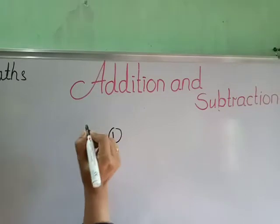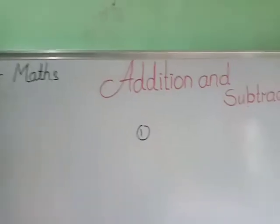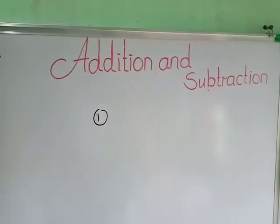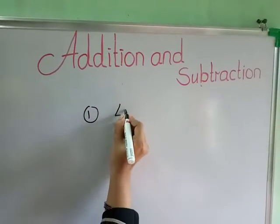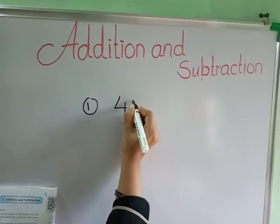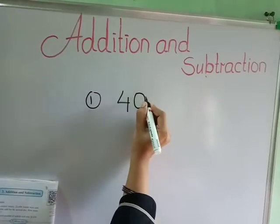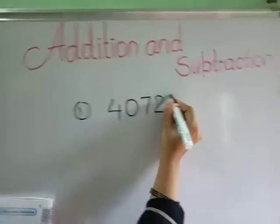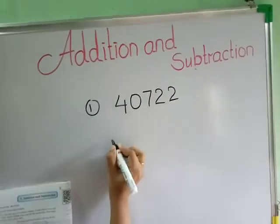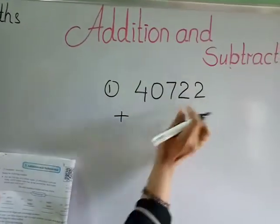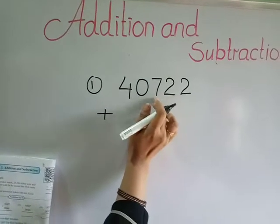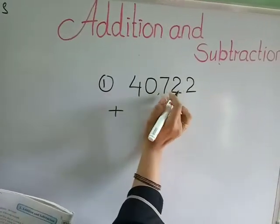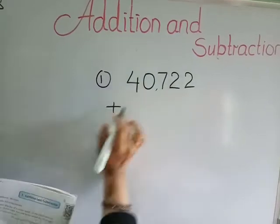First example. Unit, tens, hundred, thousand, ten thousand. Forty thousand, seven hundred, twenty-two plus...